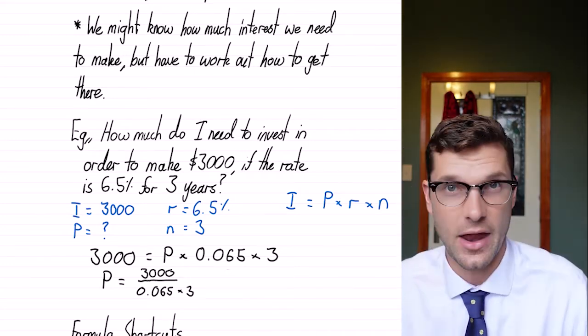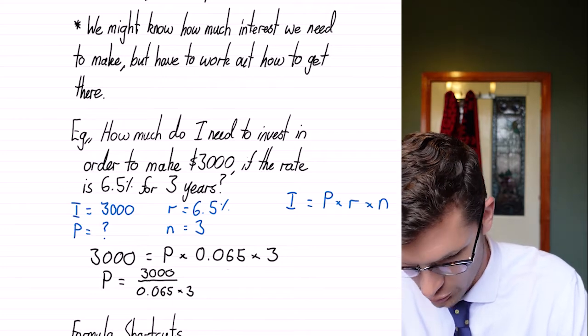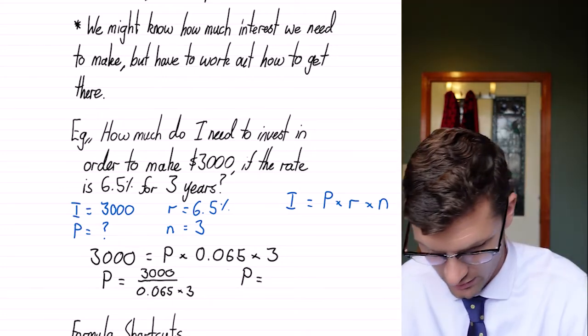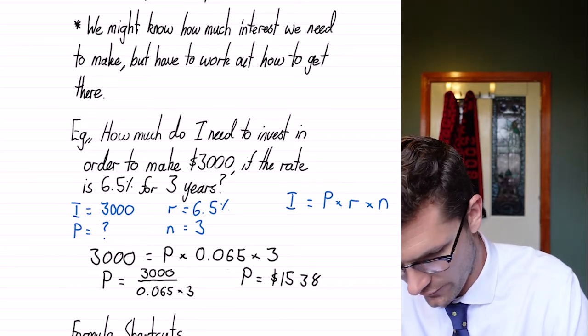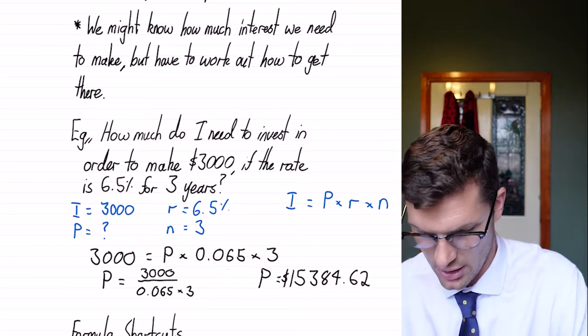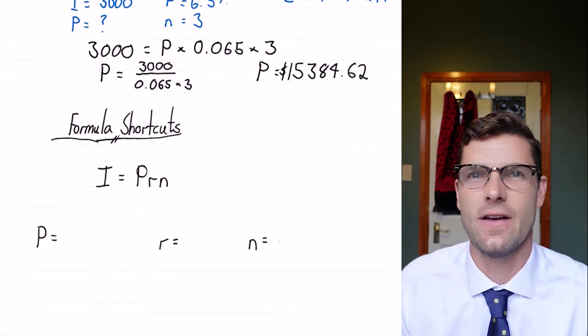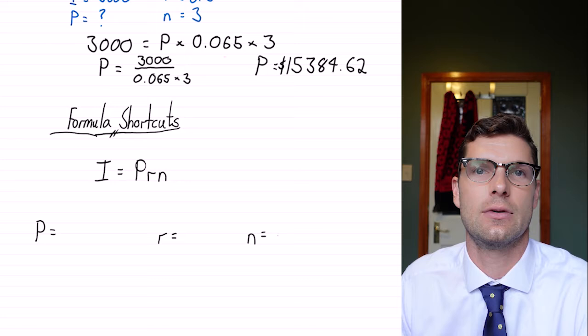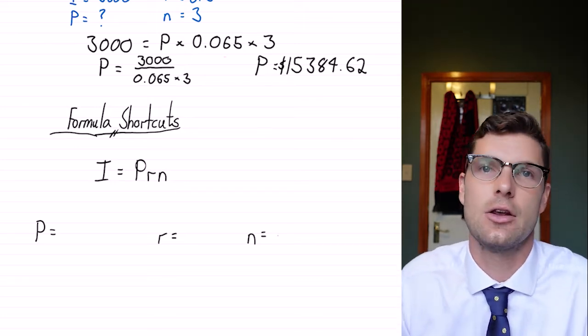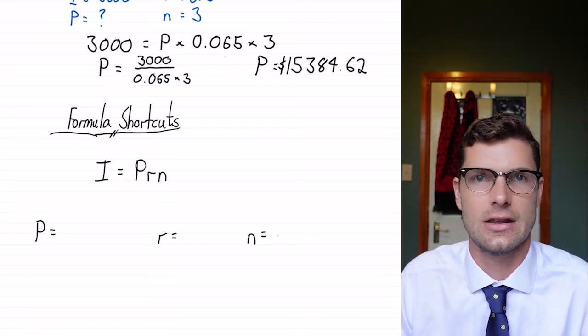So for this one, if you type that into your calculator, the principal or the amount of money we've got to put in is equal to $15,384.62. Okay, so people don't invest that weird amount, but you would know that you have to invest about 15 grand in order to make three grand in three years.